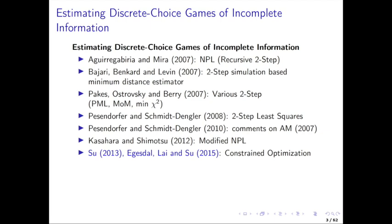Bajari, Benkard, and Levin's approach is based on the same principle of estimating reduced form policy functions in the first step, except they allow those policy functions not only to be CCPs from discrete choices but also from continuous choices. They simulate forward using those policy functions and deviations from them to form constraints used in estimation. For those interested in estimating continuous choice games, that paper is worth looking at.